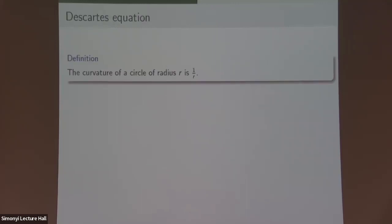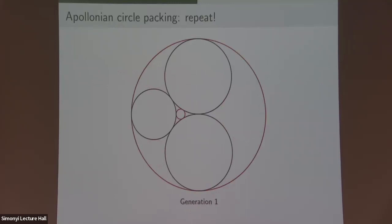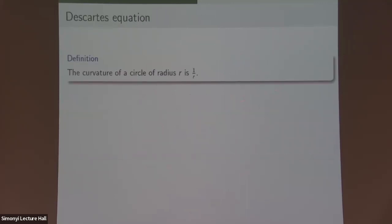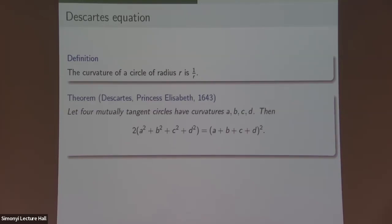We want to make some algebra of the equation. If you're given these three circles, because there are only two more you can draw, there should be some algebraic equation relating the possible radii or curvatures. This brings us to the work of Descartes. The curvature is just the inverse of the radius — this will be the important player in today's talk. There's a theorem proven in the correspondence between Descartes and Princess Elizabeth: if you have four mutually tangent circles with curvatures A through D, then twice the sum of their squares equals the square of their sum. This is a really beautiful symmetric equation.